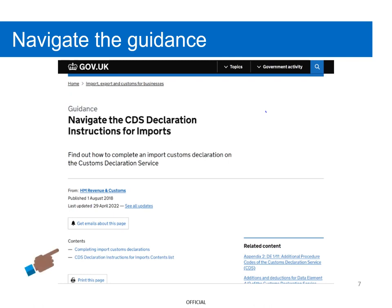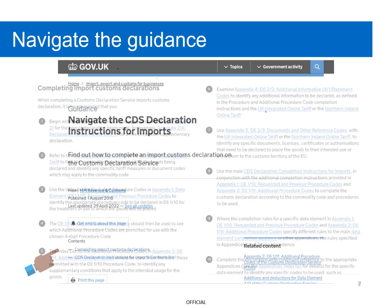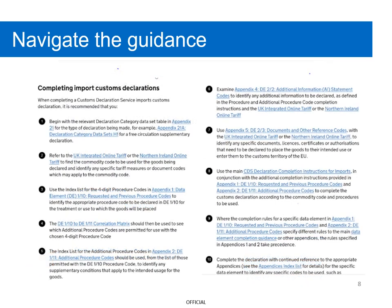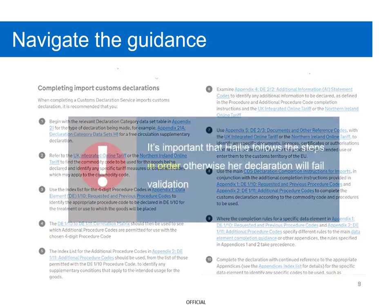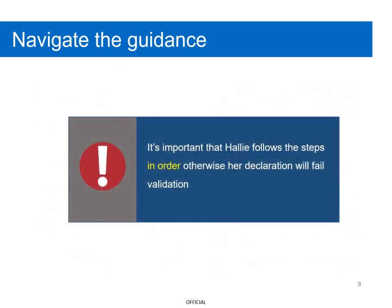Hallie's first step is to start with the import navigation guide, which gives step-by-step instructions on how to complete the import declaration. Once Hallie has selected the appropriate link, she will see the 10 steps she'll need to follow to submit a valid declaration. It's important that Hallie follows the steps in order, otherwise her declaration will fail validation.